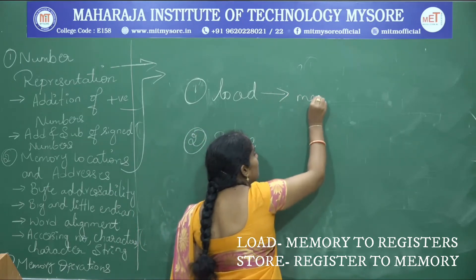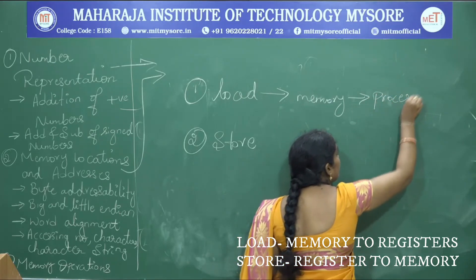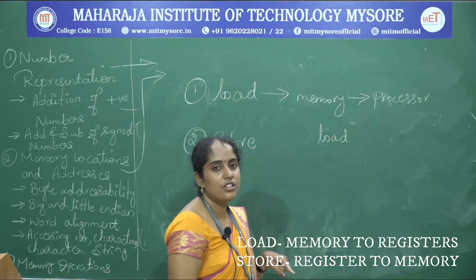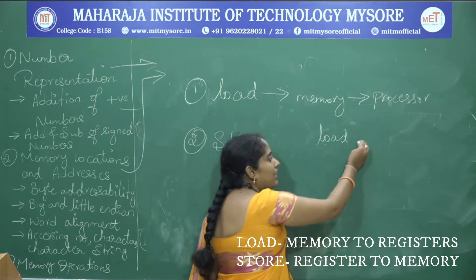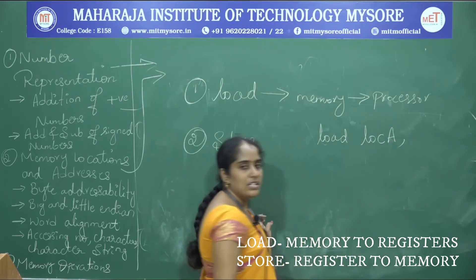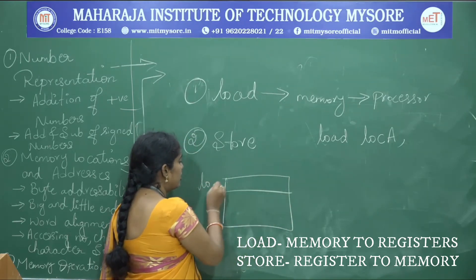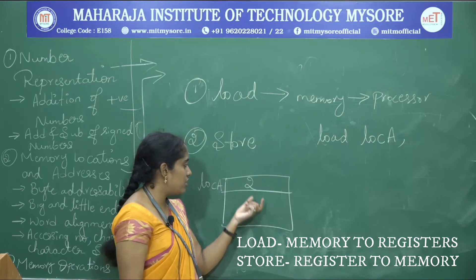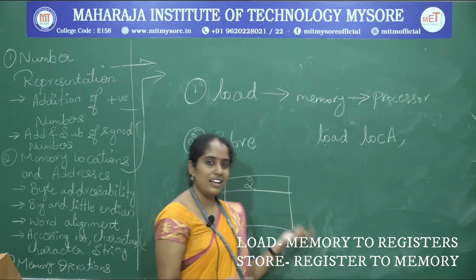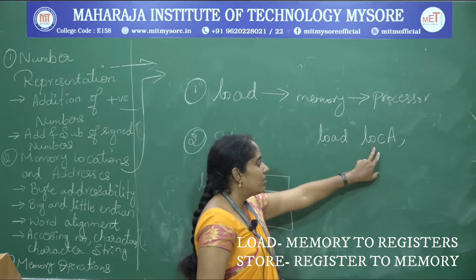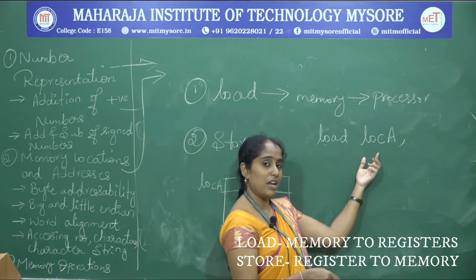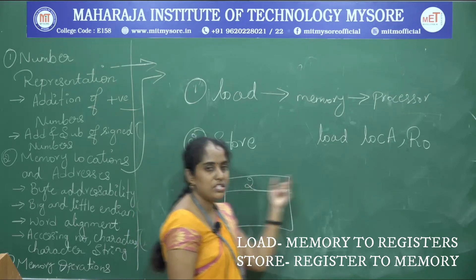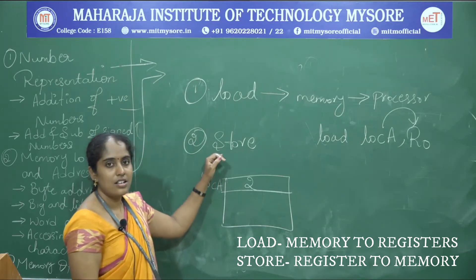For the load instruction, you specify a memory location address. For example, if memory location A contains the value 2, the instruction loads it into register R0 inside the processor. So the value 2 is copied from memory location A to register R0.